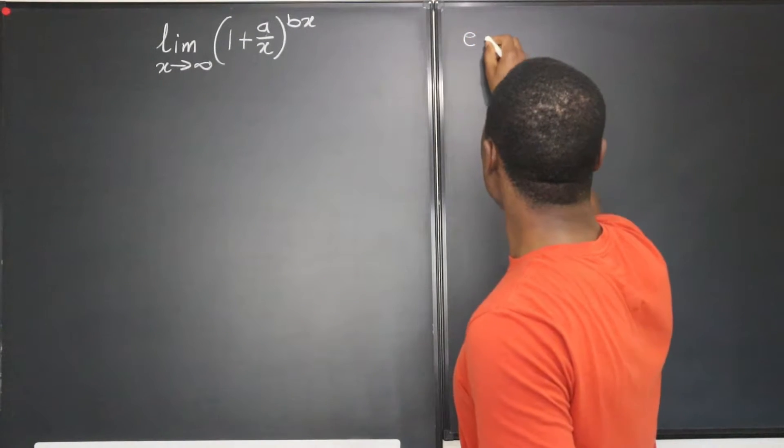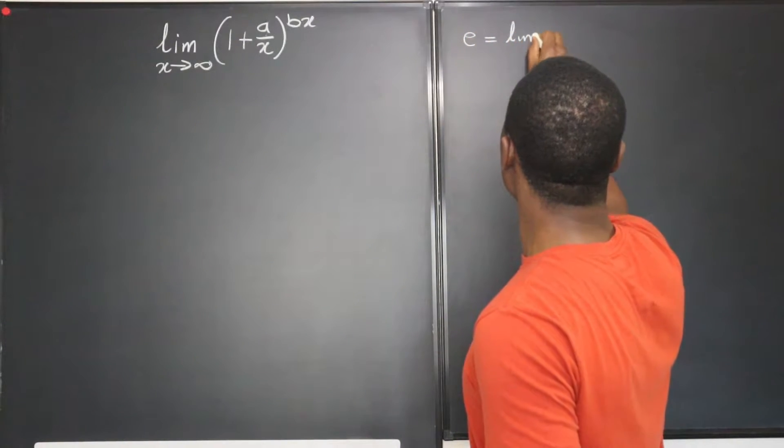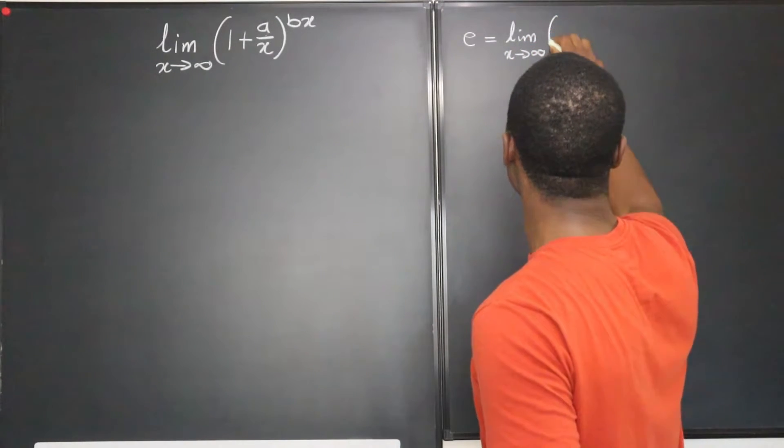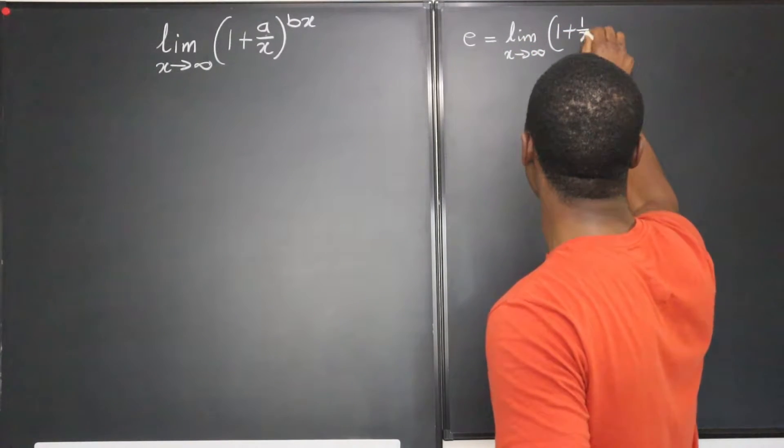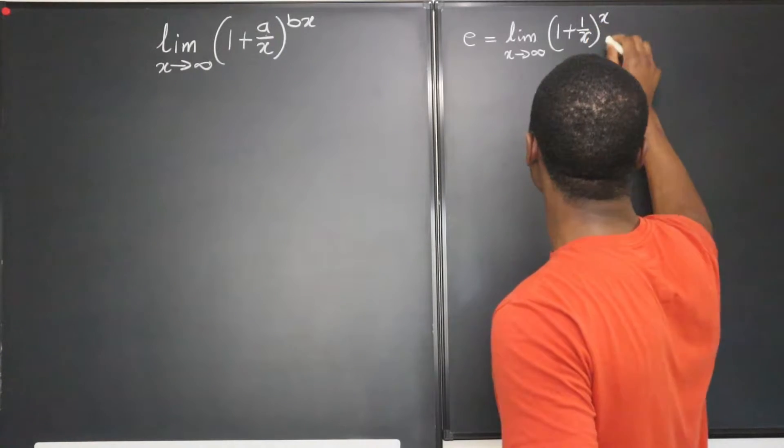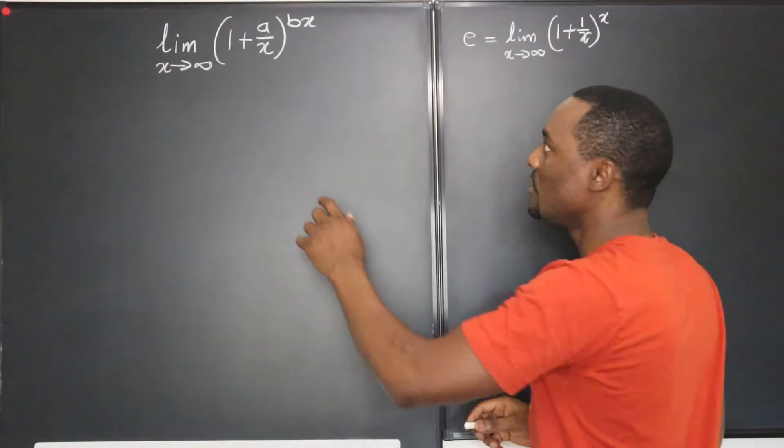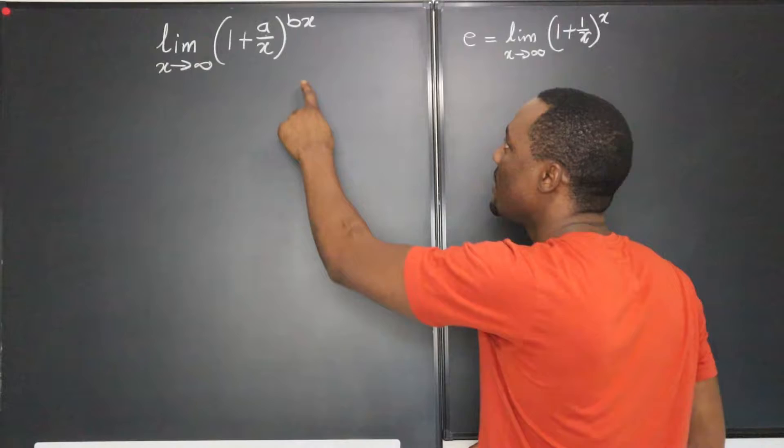Which is e equals the limit as x approaches infinity of 1 plus 1 over x to the x. But now, things have changed. You have a over x and then you have bx.